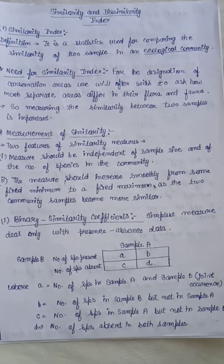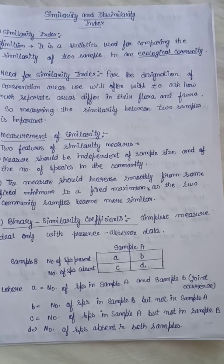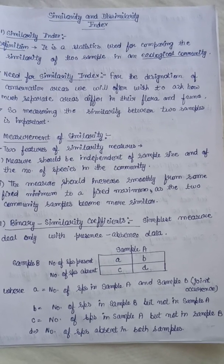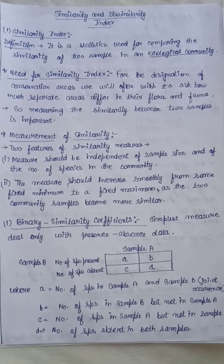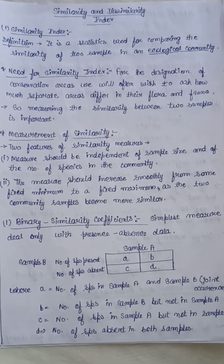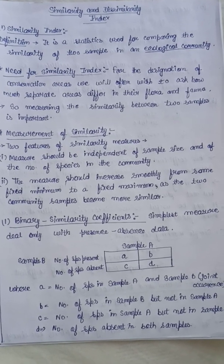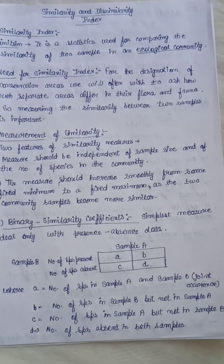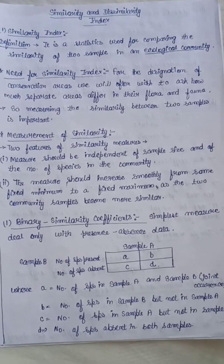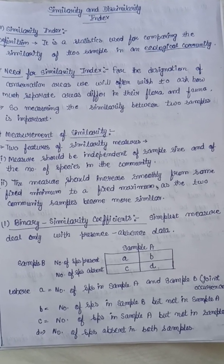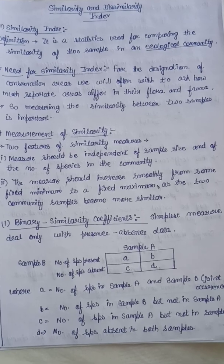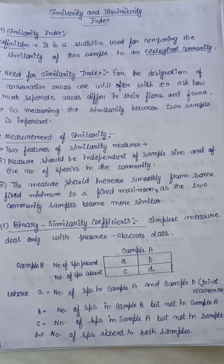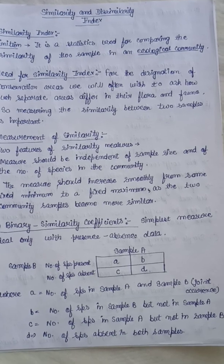Generally, there are two types of measures to calculate similarity between species. The first is the binary similarity coefficient, and the second is quantitative measures. Binary similarity coefficients are the simplest measures — they only deal with presence and absence data, that is, whether a particular species is present or absent in a community.